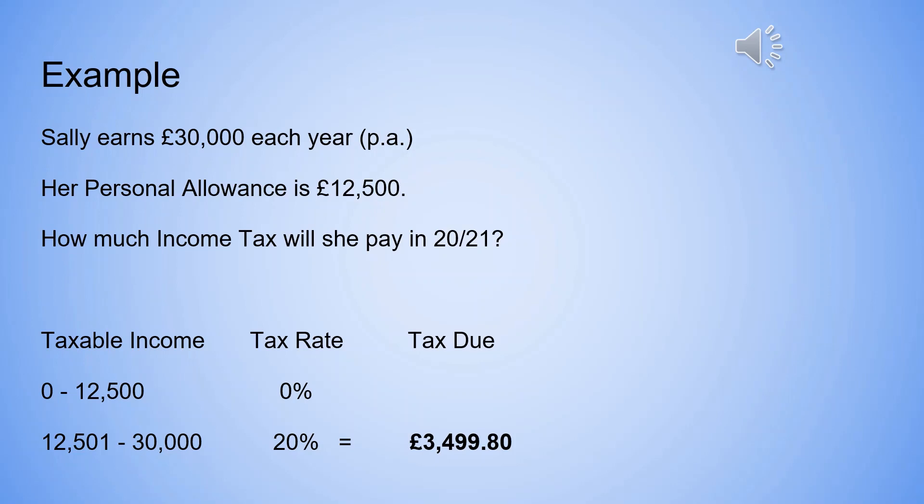Here's an example of how the bands work. Sally earns £30,000 a year. Her personal allowance is £12,500, so the first band will be from zero to £12,500 and she'll pay zero taxation on that because that's her tax-free earnings.